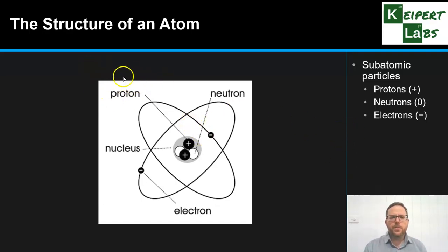We've got the protons, we've got neutrons, and electrons. Now, these subatomic particles have this property we call charge, electric charge. The protons have a positive charge. The neutrons have zero or a neutral charge. Whereas electrons have a negative charge. So, protons and electrons have opposite charges to one another.